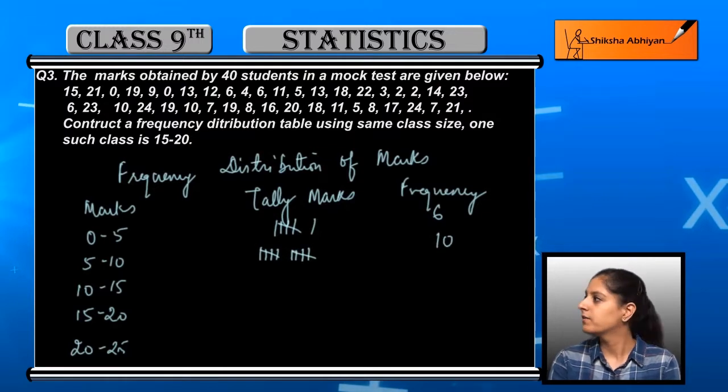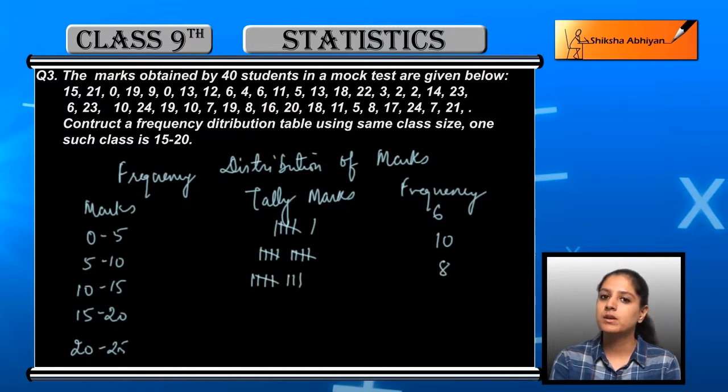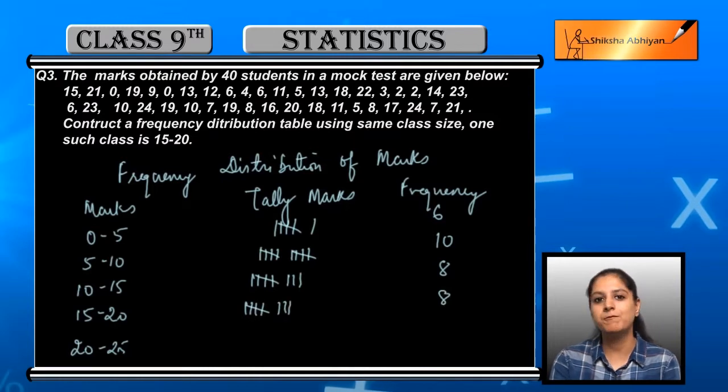In numerals we will write. Keep in mind that the higher value we will not include. For example, 15 to 20 we will not include 20. 20 to 25 we will include 20.